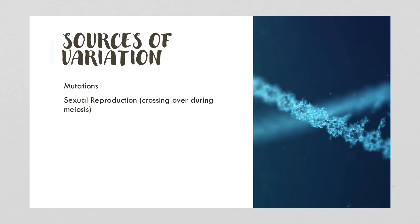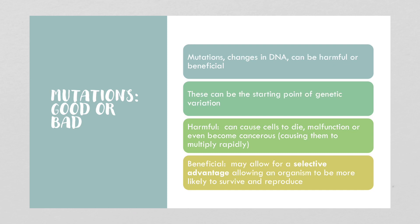So where do our variations come from? They come from mutations, they come from our DNA, and they come from sexual reproduction — which includes the random assortment of chromosomes during meiosis, but also crossing over during meiosis. Mutations are changes in your DNA, and they can be harmful to an individual or they can be beneficial. These can be the starting point of genetic variation.